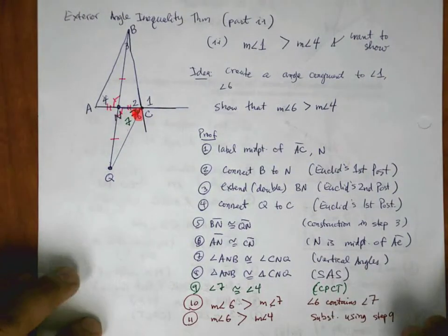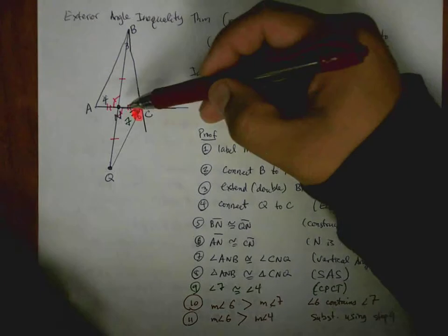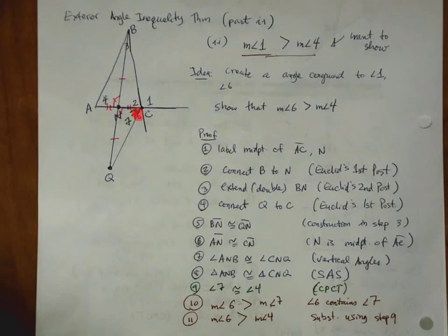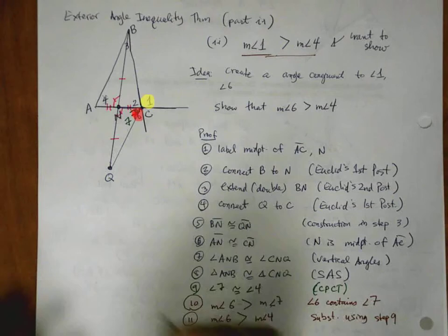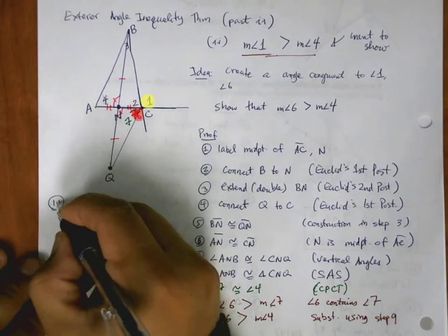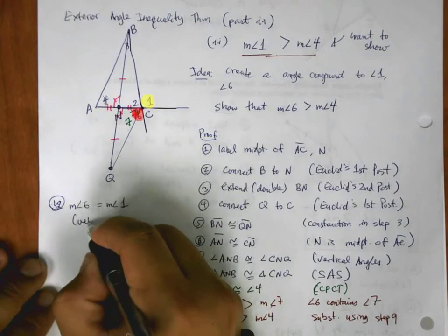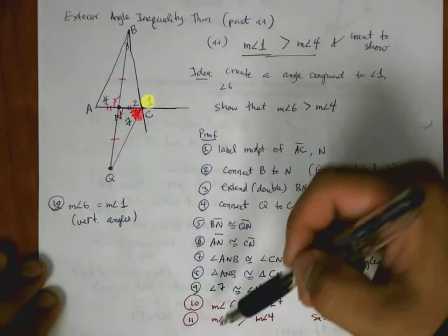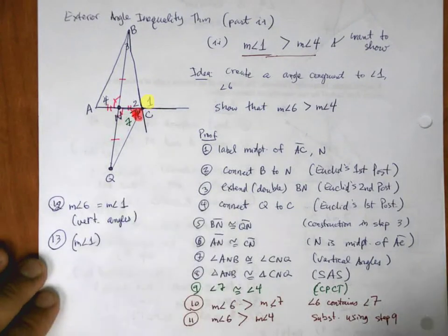So this is almost identical to what we had before. But let's not forget, this is what we're trying to show. We need to get angle 1 to be bigger than angle 4. Not angle 6. But look at this picture. Angle 6, that's the red part, is congruent to angle 1. Look at angle 6 and angle 1. Those are vertical angles. So the measure of angle 6 is equal to the measure of angle 1 because they are vertical angles. And now we can make a substitution. We can take 1 and substitute it into here.